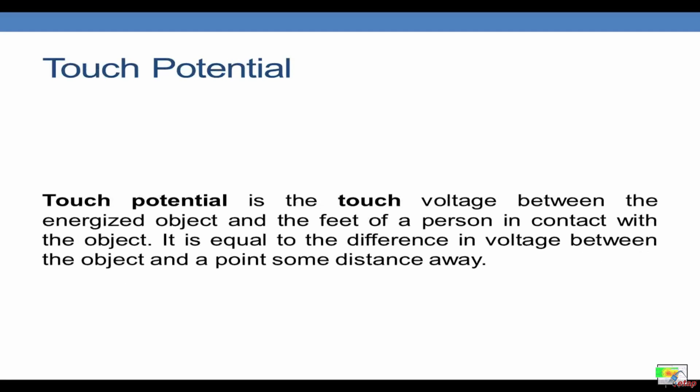Next is the touch potential. Touch potential is much simpler than the step potential. Touch potential is the touch voltage between the energized object and the feet of a person in contact with the object. This is equal to the difference in voltage between the object and a point some distance away.